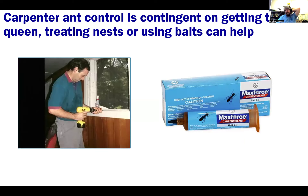Carpenter ant control is contingent on getting to the queen — you have to destroy her, not just the worker force. Treating nests directly by drilling and pouring a powder insecticide in is something that can be done, usually by a professional. There are also newer carpenter ant baits such as MaxForce, which homeowners can purchase — you put out little dots, the ants pick them up, feed it to everybody back home, and wipe the whole colony out. Make sure the bait label specifically lists carpenter ants, as not all ant baits are attractive to them.